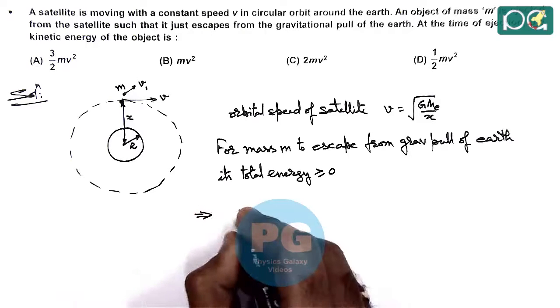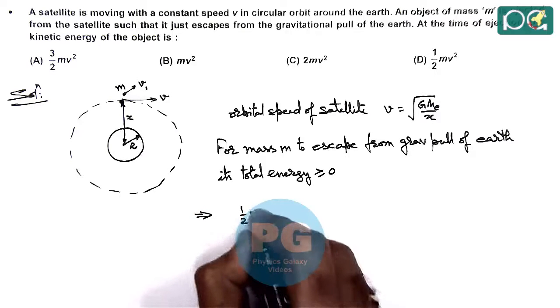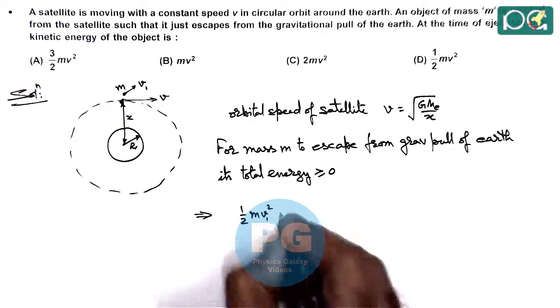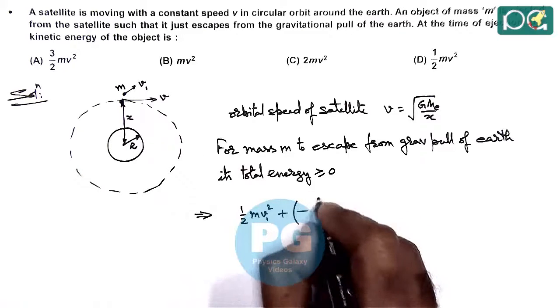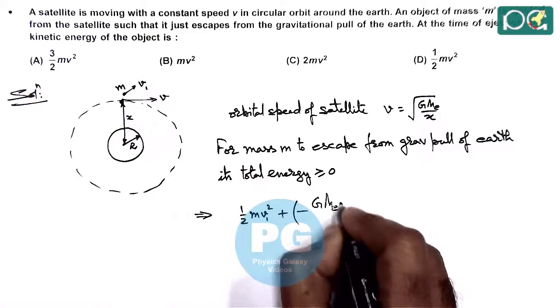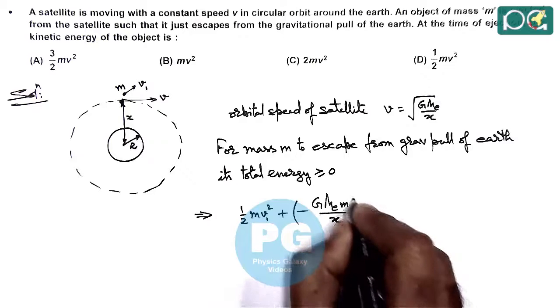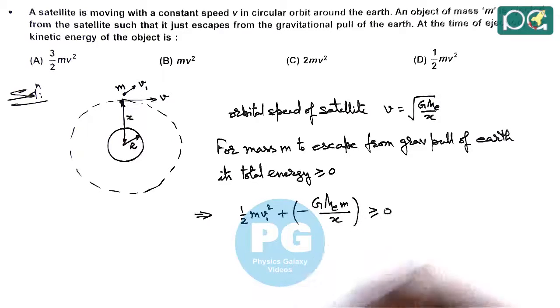The kinetic energy of the mass is (1/2)mv1². The gravitational potential energy at radius x is -GMEm/x. Their sum should be greater than or equal to zero.